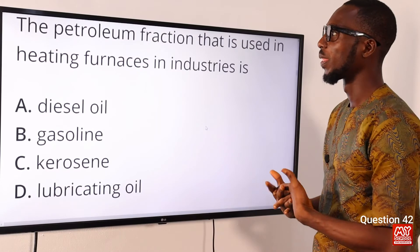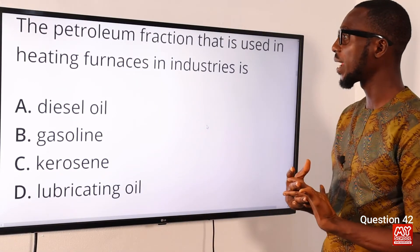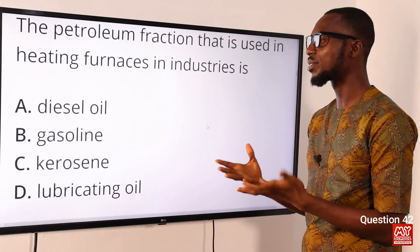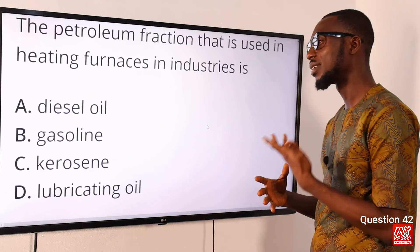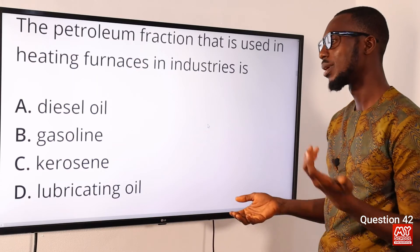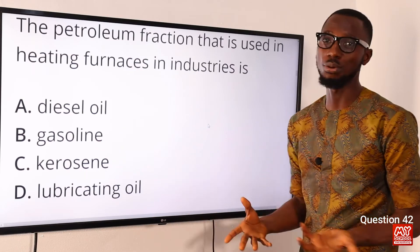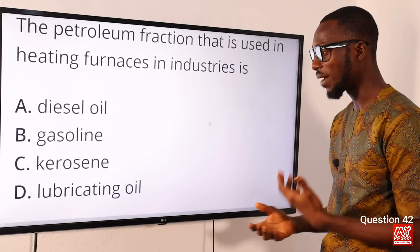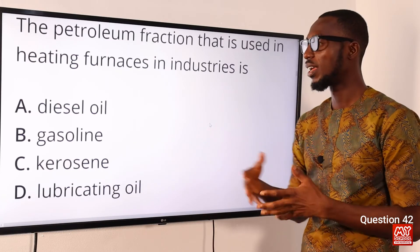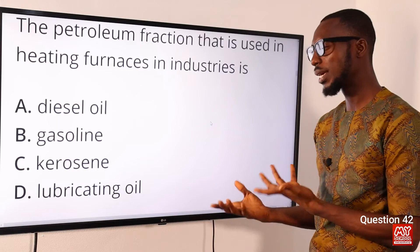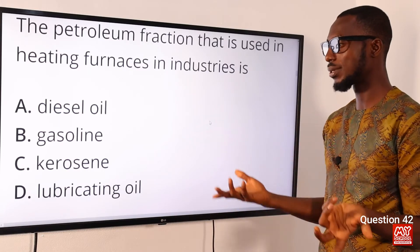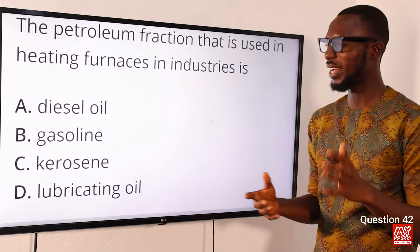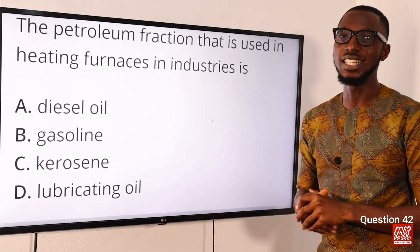Question 42: The petroleum fraction used in heating furnaces in industries is what? That is diesel oil. Diesel oil is also used to power electric generators, engines of trains, buses, and boats. Gasoline refers to petrol, used to power cars and generators. Kerosene is used for domestic cooking stoves and aviation fuel. Lubricating oil refers to lubricants. The correct option is option A for diesel oil.